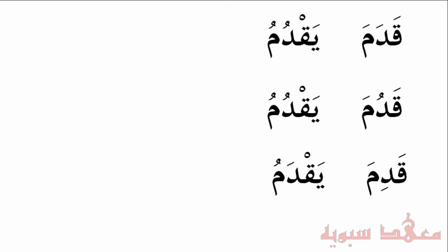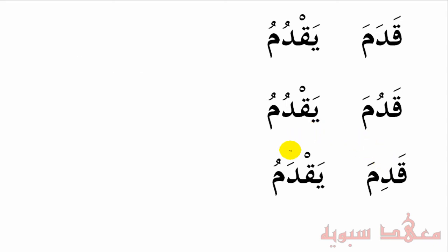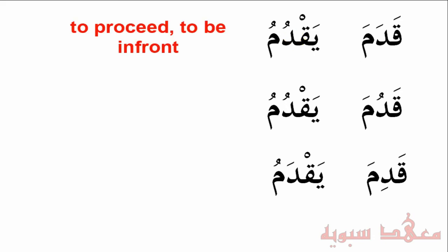From this root we actually have three categories of verbs. For those who have studied morphology, they'll understand the different categories. On one side we have the past tense verbs, and on the other side the present tense verbs. What changes is the ayn kalima — here it's fatha and here it's dhamma, so this is bab nasara. This verb means to proceed or to be in front, and it is transitive. Then we have qaduma yaqdumu — dhammun dhammun — verbs on this pattern are used for states and are intransitive, meaning to be old or ancient. And finally we have qadima yaqdamu — bab sami'a.